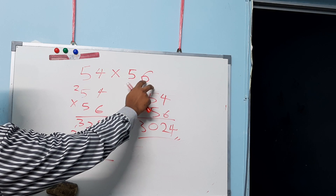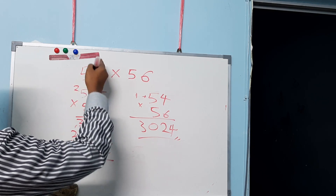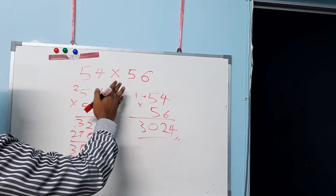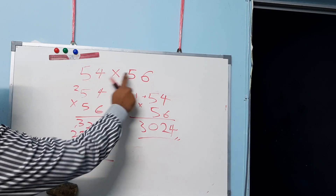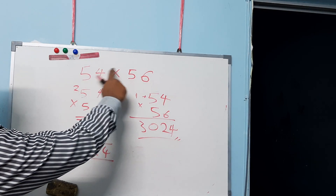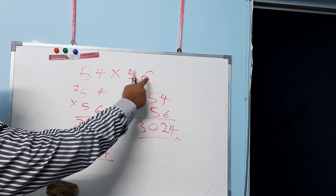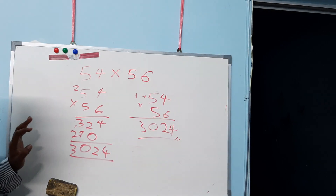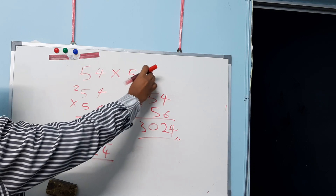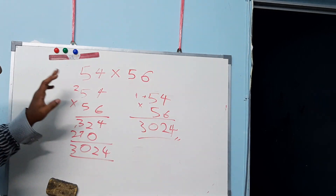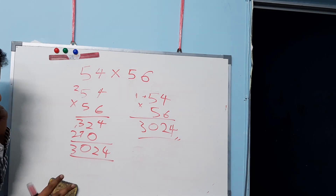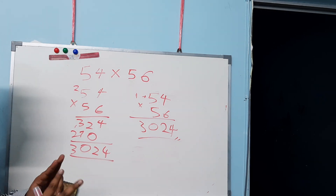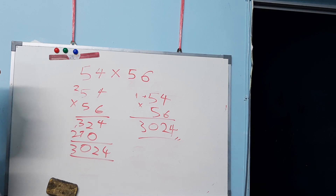Rule number two: the right-hand side digits of both numbers should add up to 10. In this example, 4 plus 6 is 10. It can be in the form of 5 plus 5, meaning 55 times 55, or 57 times 53 — as long as the right-hand side digits of each number add up to 10. You can only use this method if both rules are satisfied.